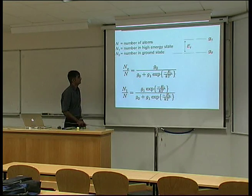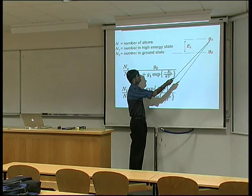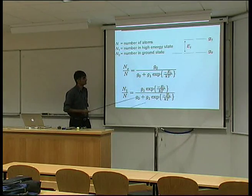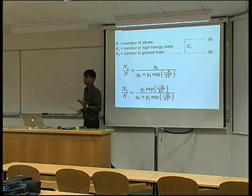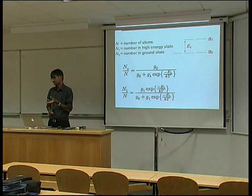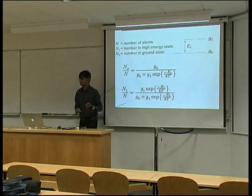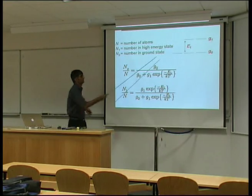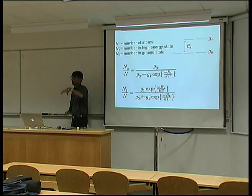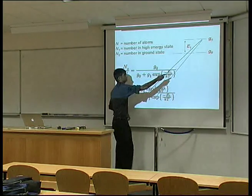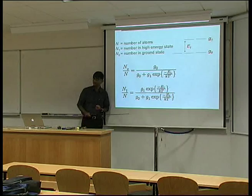Let's imagine we have two states of energy. One is the ground state G-naught, and a higher level G1. At the ground state I have three energy levels — that's called a degeneracy of three. These are the same level of energy but I can place three particles there. The degeneracy for the higher energy level is G1 equals two, so if I place atoms there they have the same energy but two states.